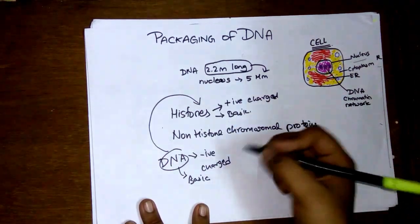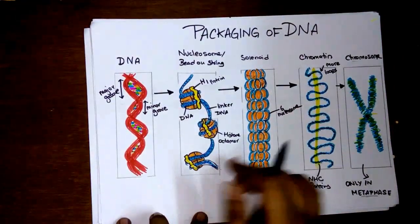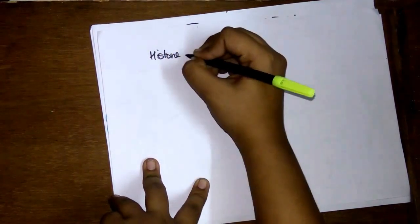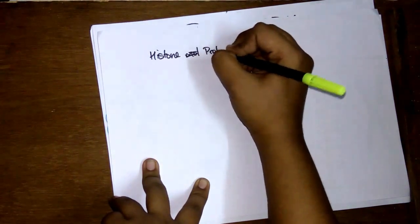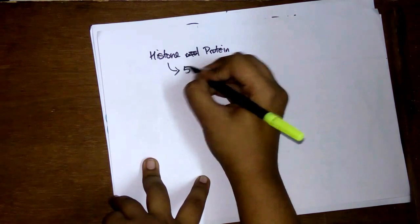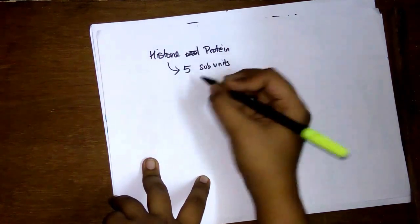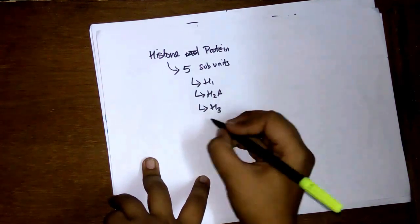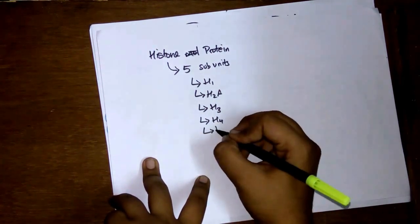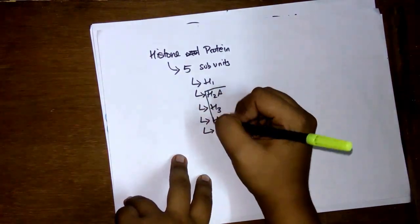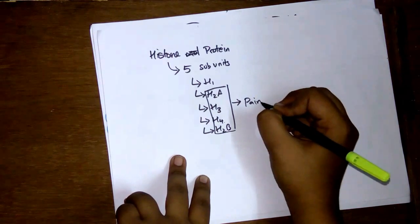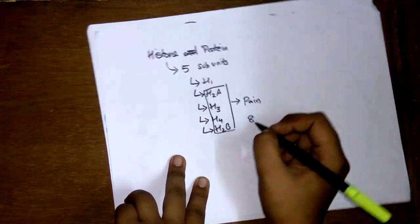It wraps around the histone molecules to form the package structure which we call the bead on the string. A histone protein has five subunits and the five subunits are H1, H2A, H2B, H3, and H4. Four of these occur in pairs, so H2A, H2B, H3, and H4 occur in pairs which means there are eight of them and all these eight form octamers.